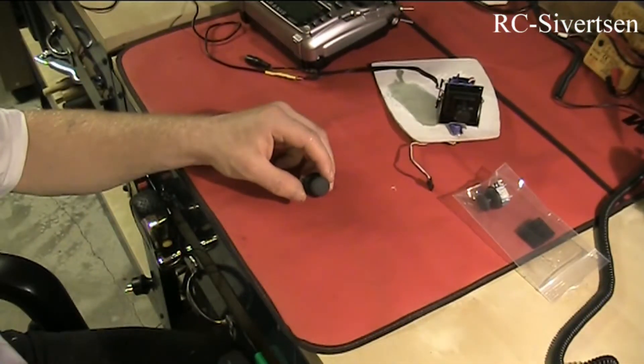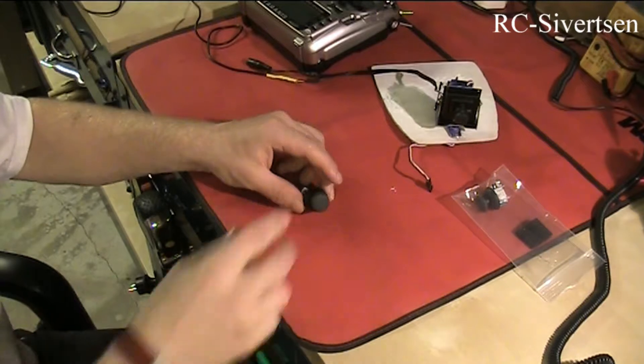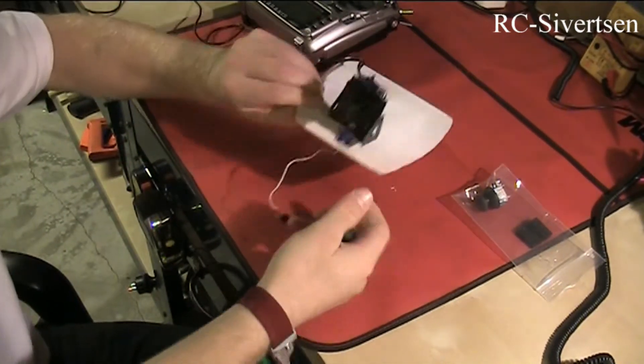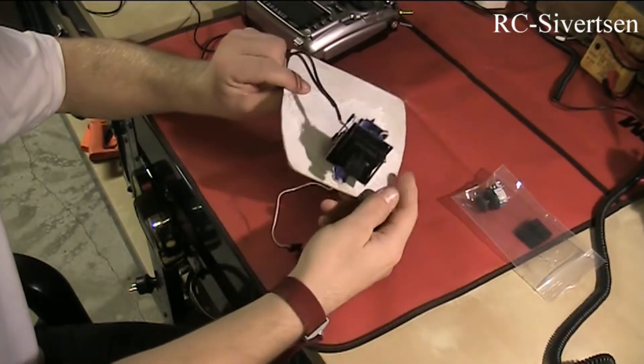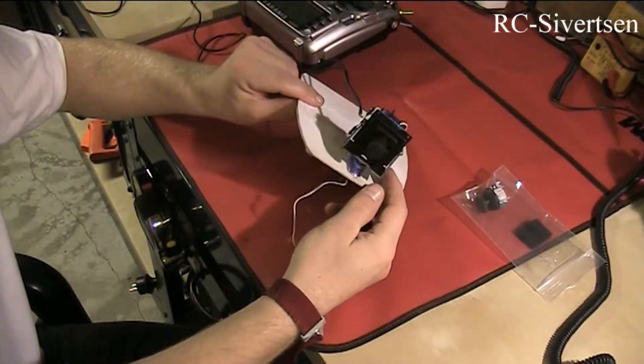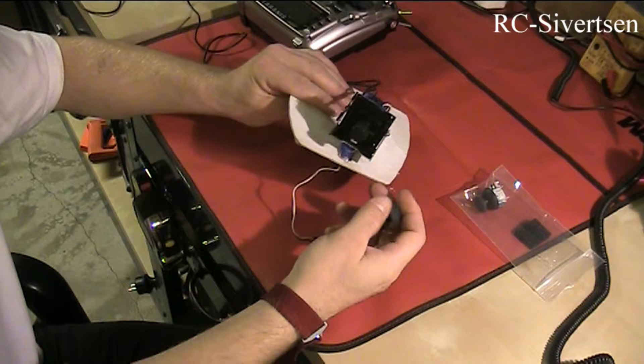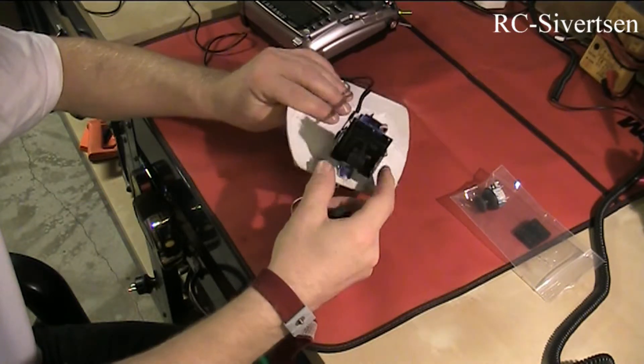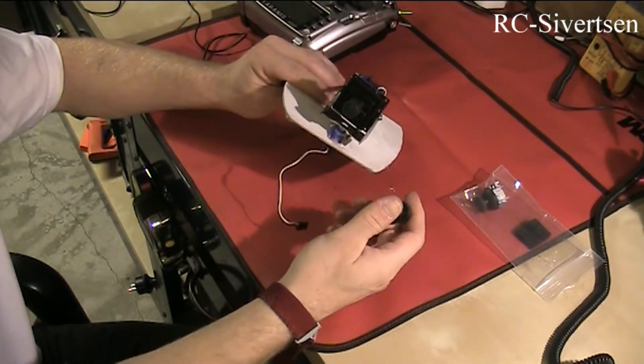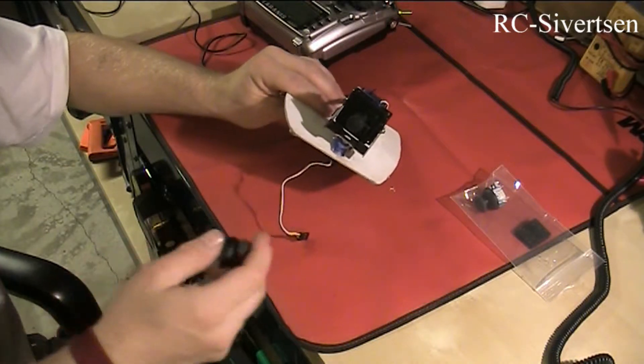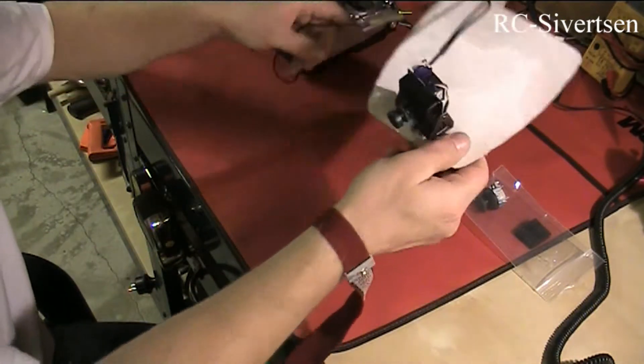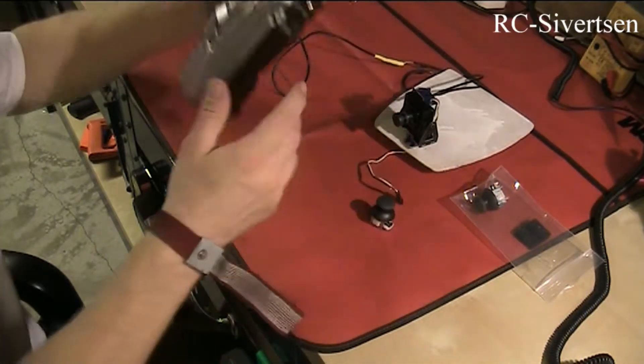Let me show you what I'm talking about. I have this pan and tilt system I'm planning on using on my Icon A5. I also have almost the same setup for my Sky Mule.